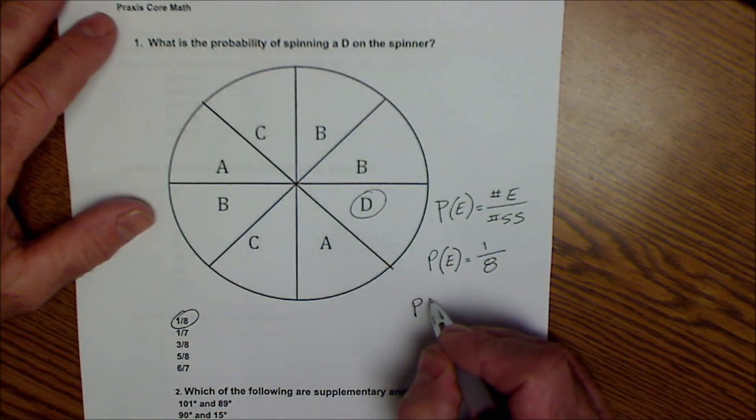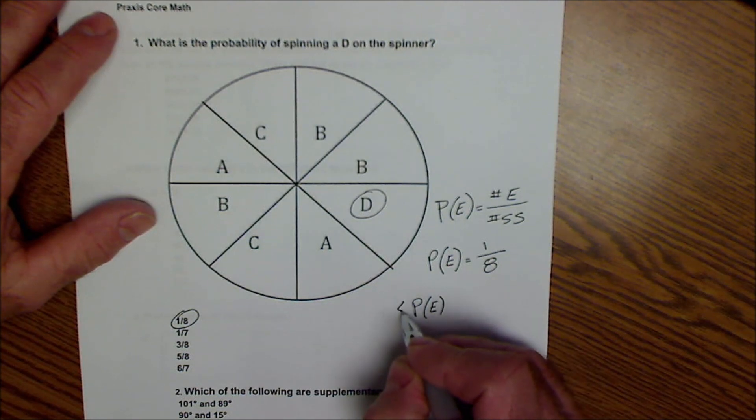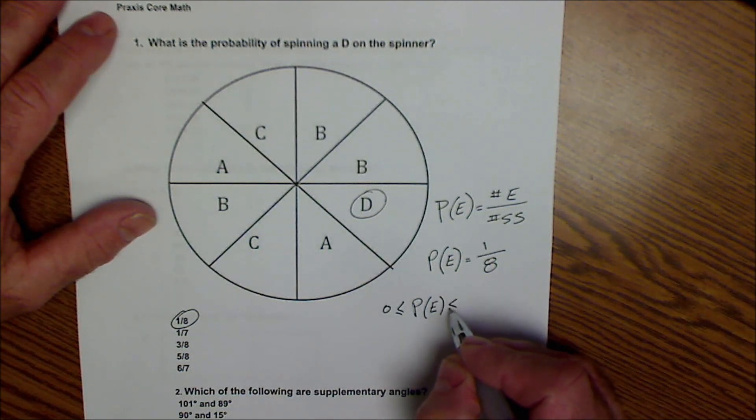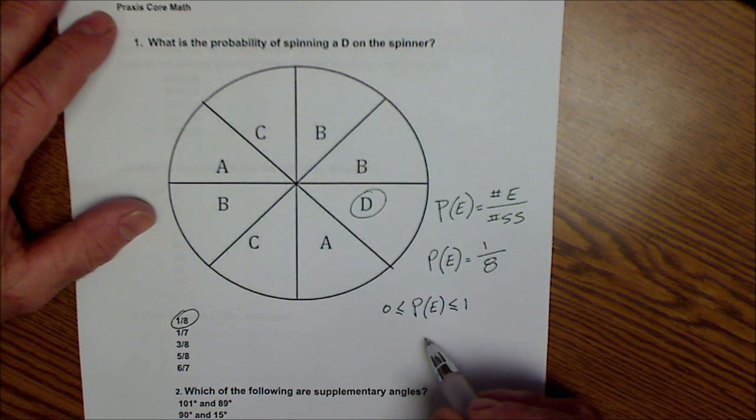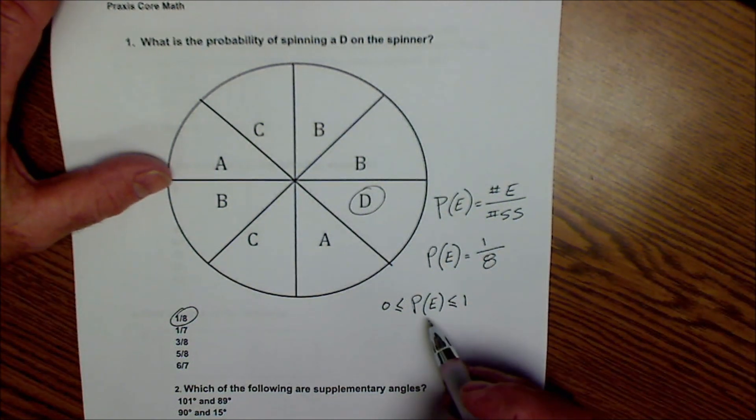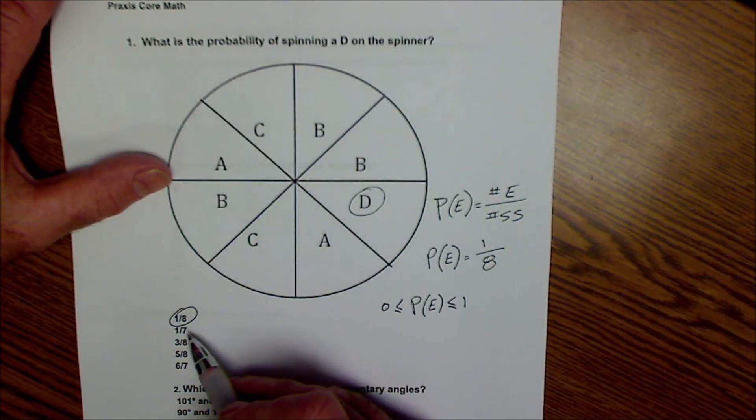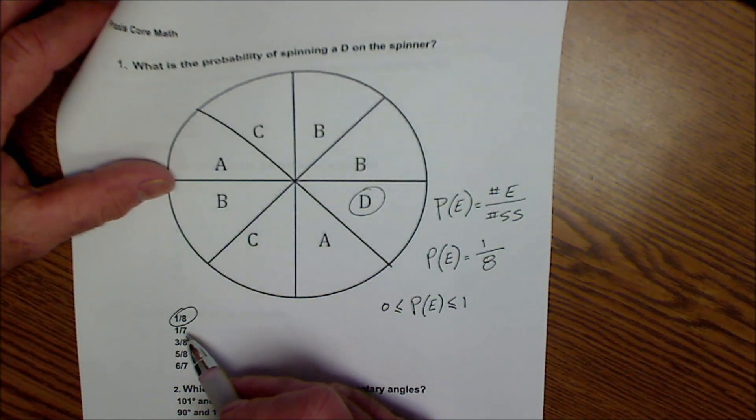All probabilities of all events have to be greater than or equal to zero and less than or equal to one. So all probabilities are between zero and one. You can represent it as a fraction, a decimal, a percent, either way.